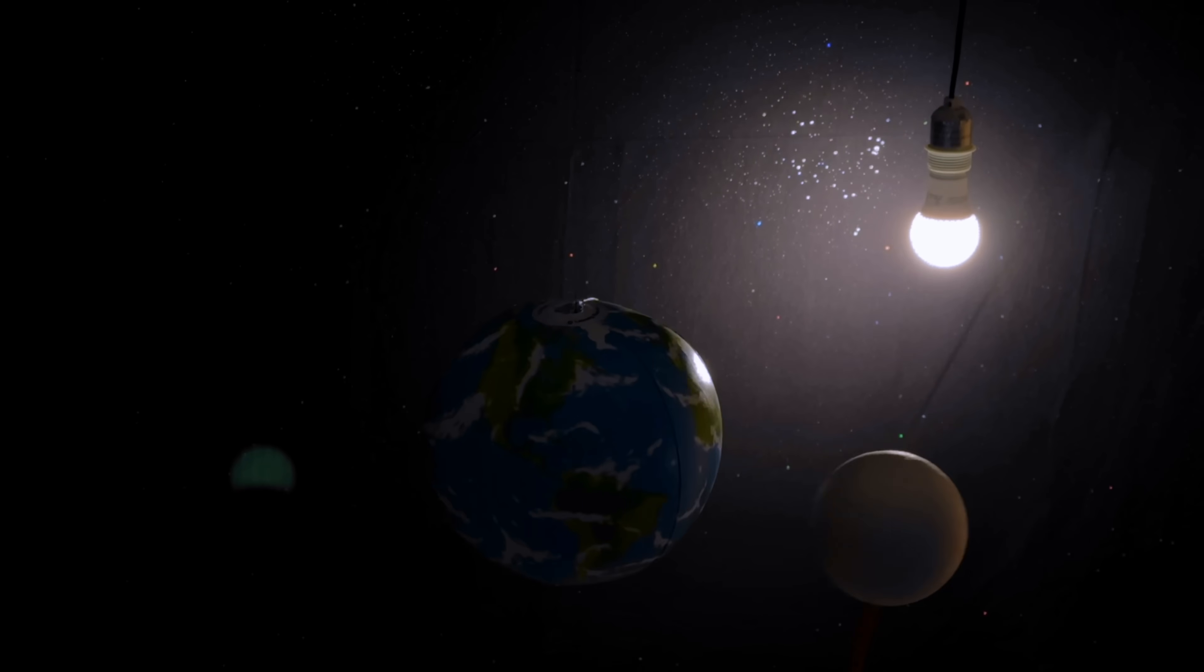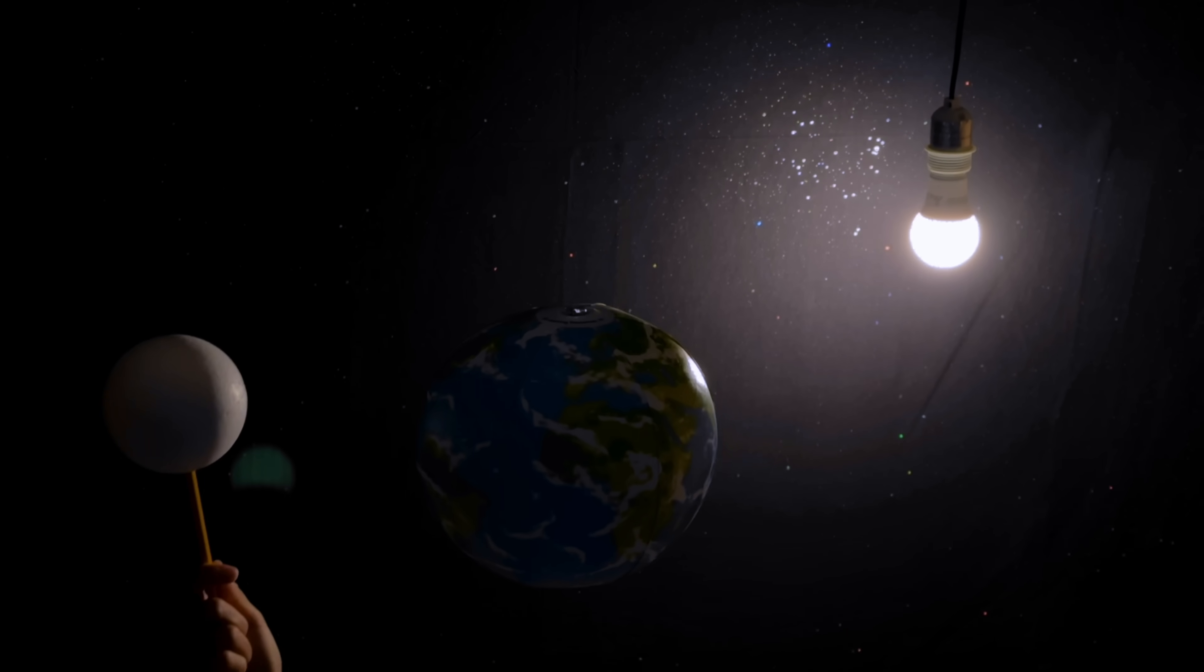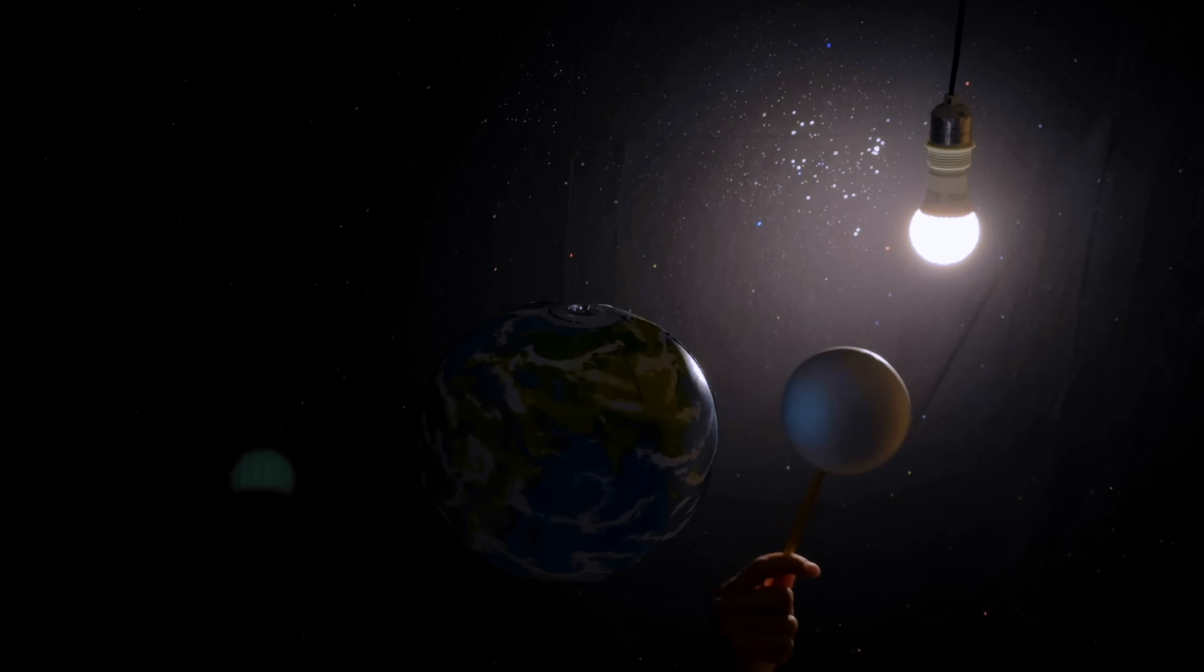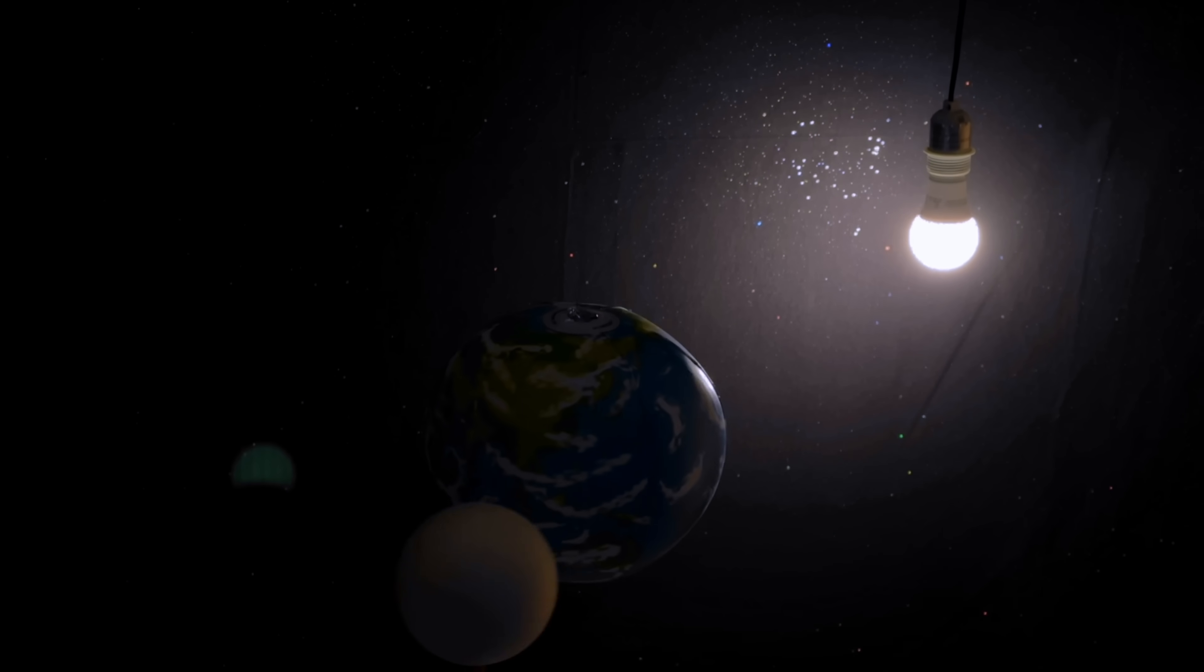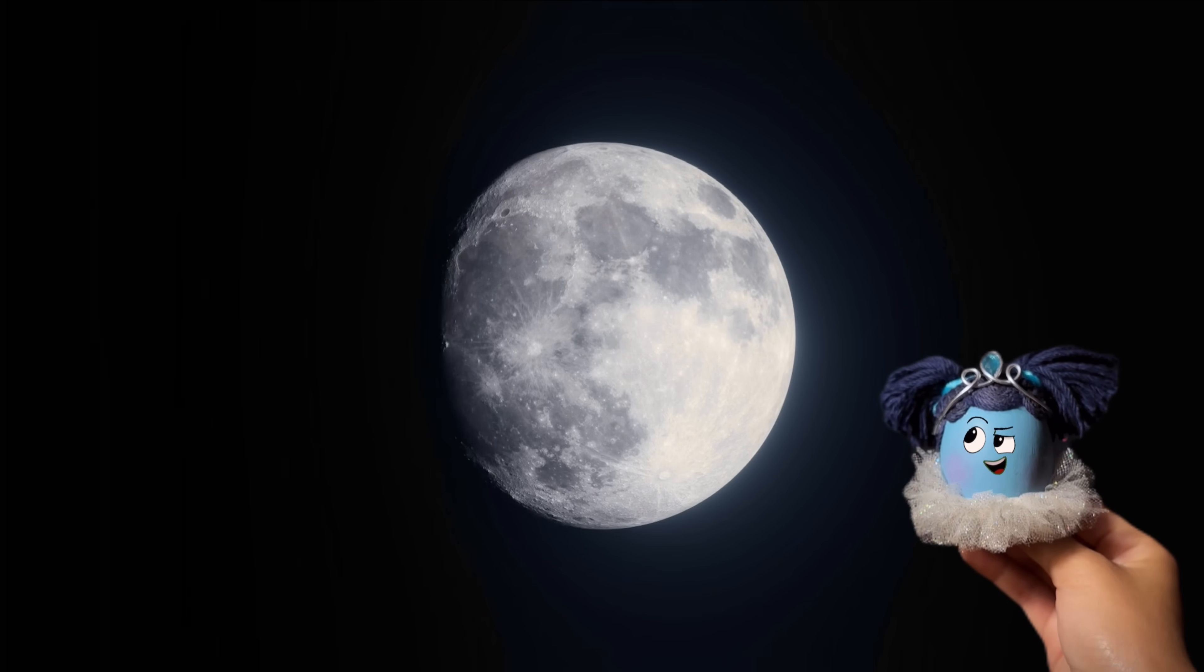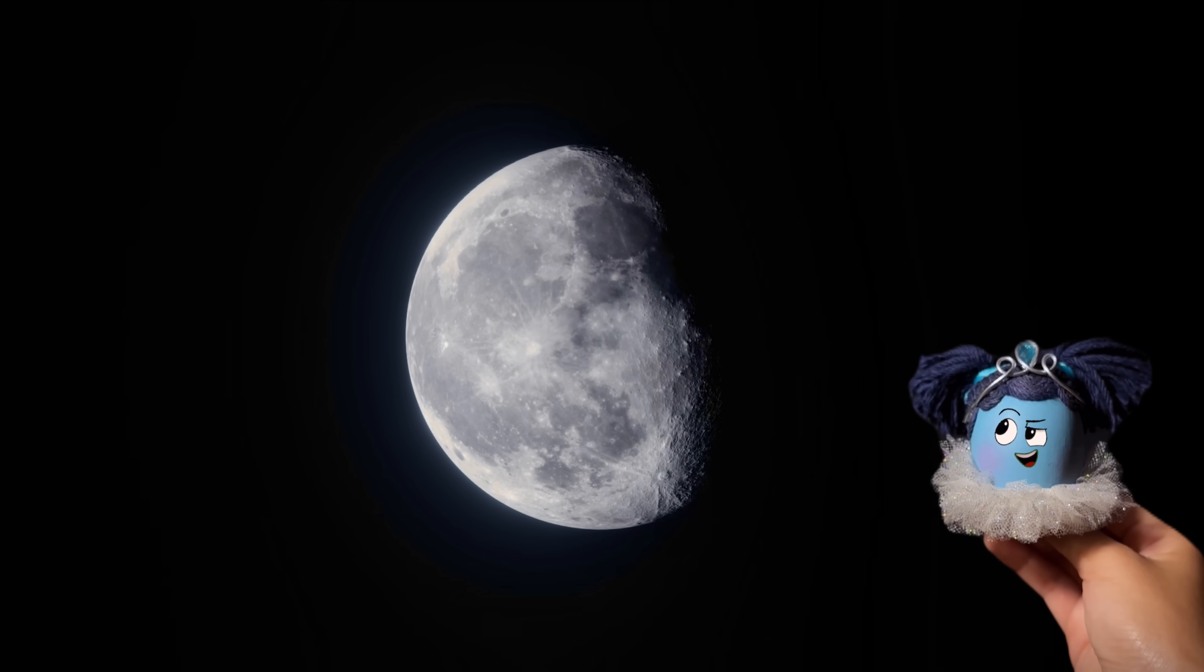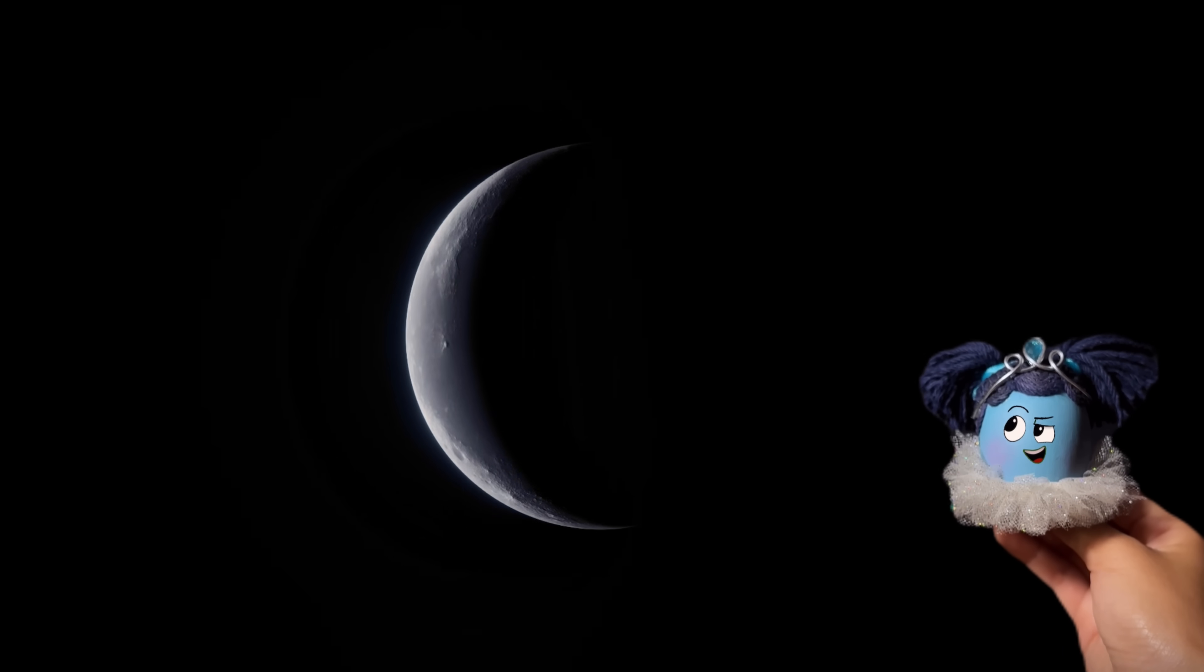And that is how the moon plays hide and seek with the sun, while orbiting the earth. Next time you look up at the night sky, see if you can tell what shape the moon is.